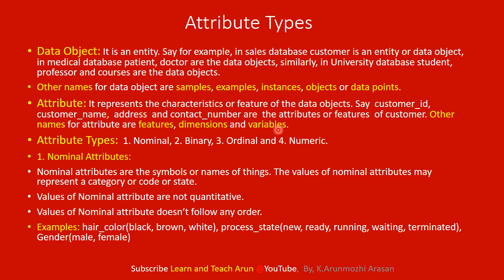In a relational database, we store data in table format. Each row represents a data object, and each column represents one attribute — that is, the features, dimensions, or variables of that data object.